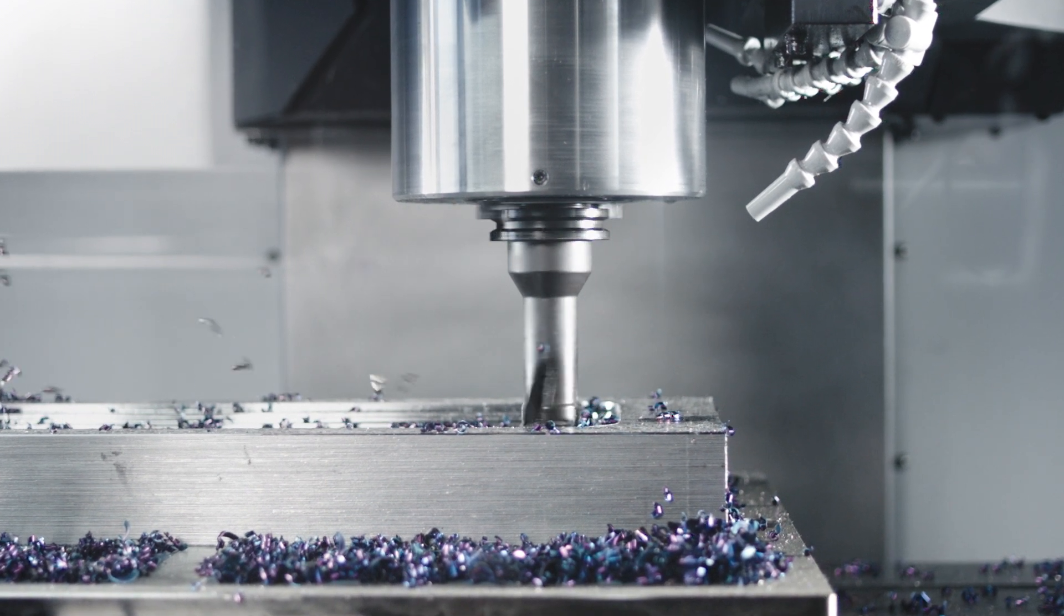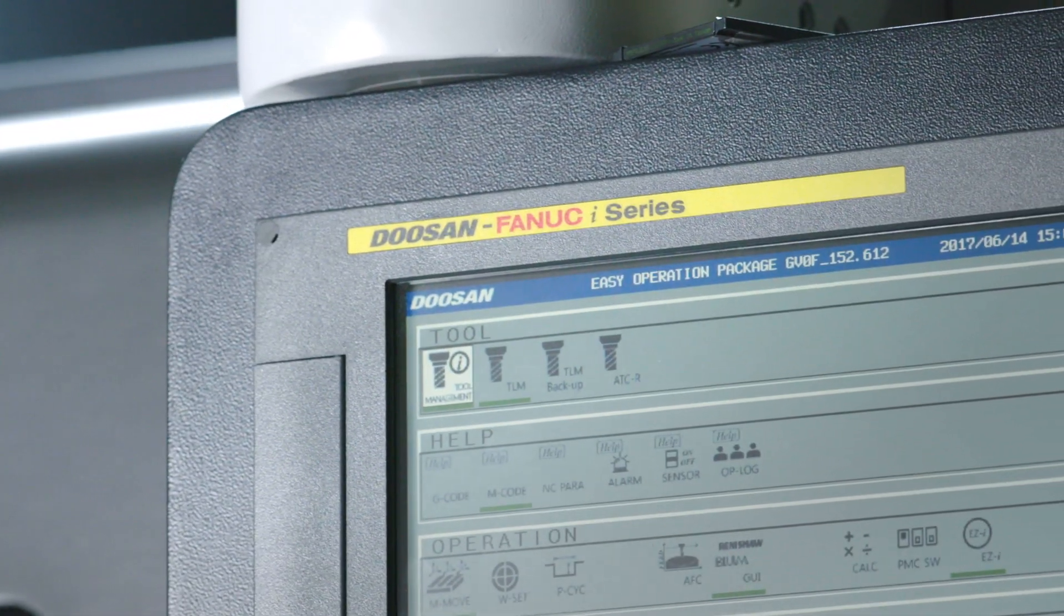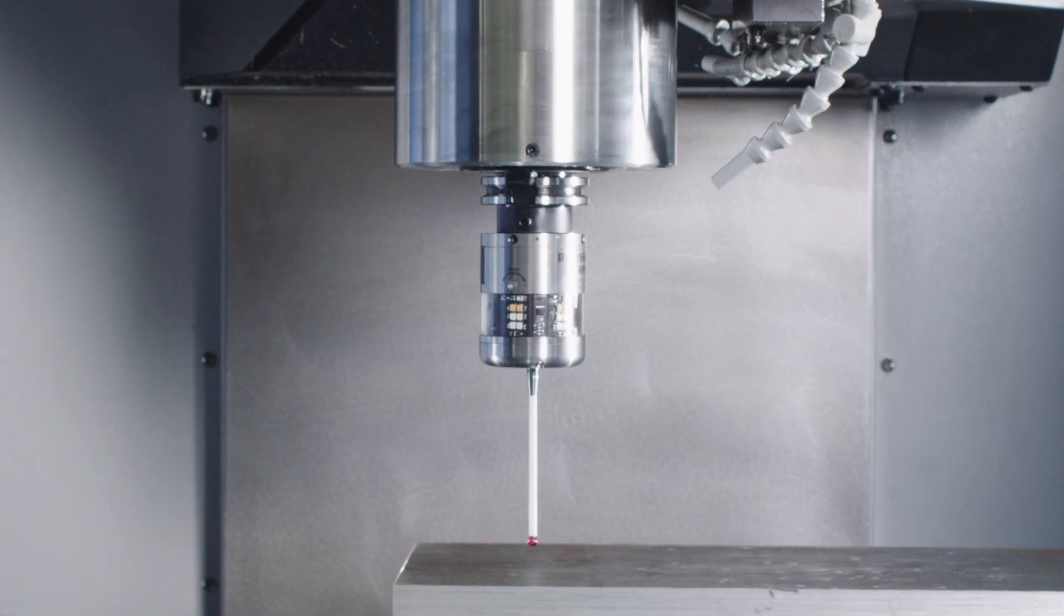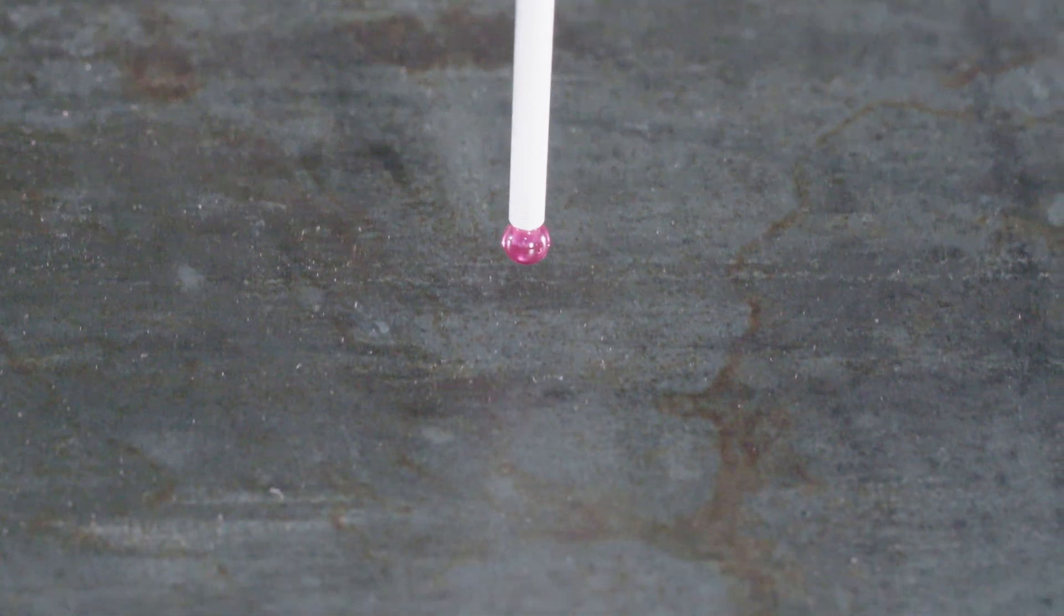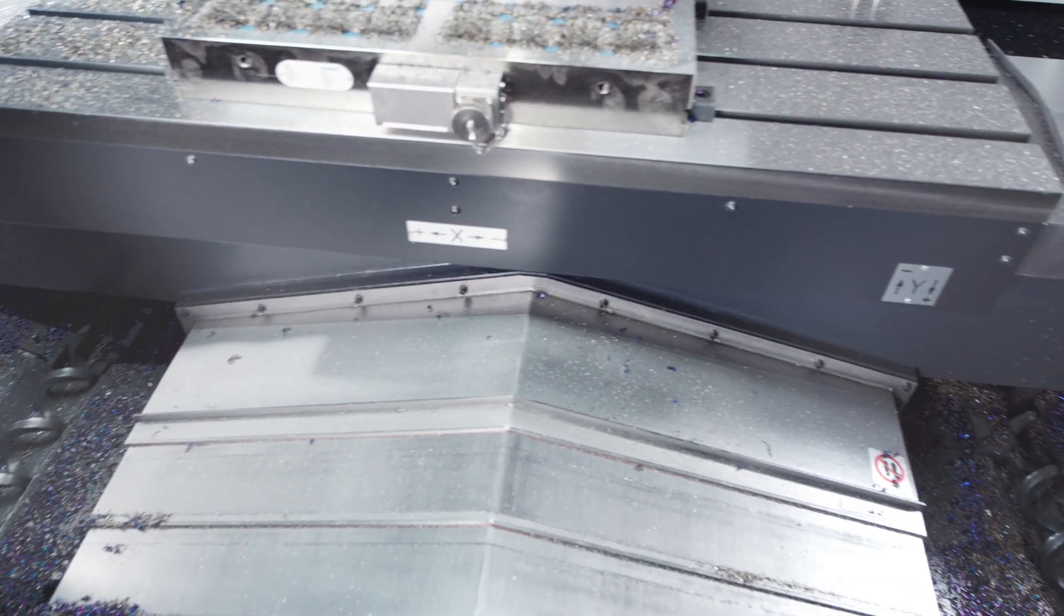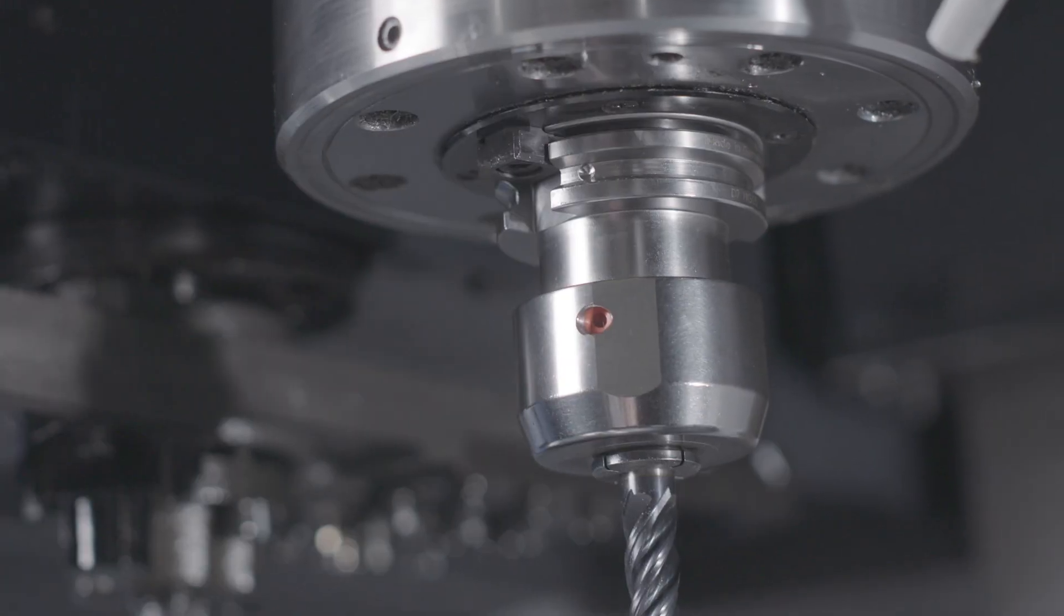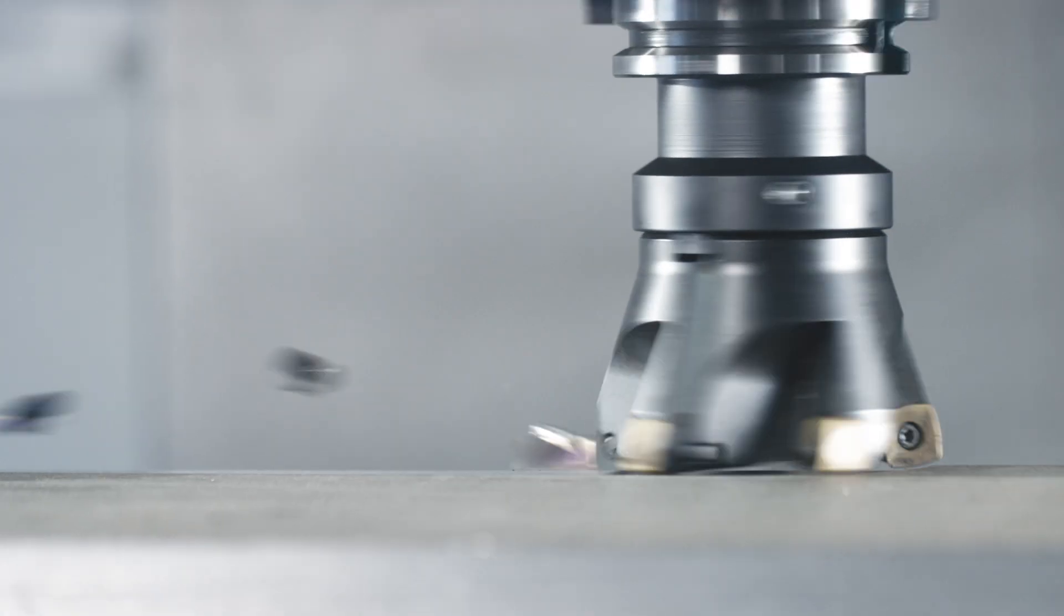This workhorse has a ton built in. Doosan Enhanced Fanuc Control. Pre-wired for Renishaw probing. Dual-screw chip auger. Through-spindle coolant. Spindle chiller. Big plus spindle. All standard.